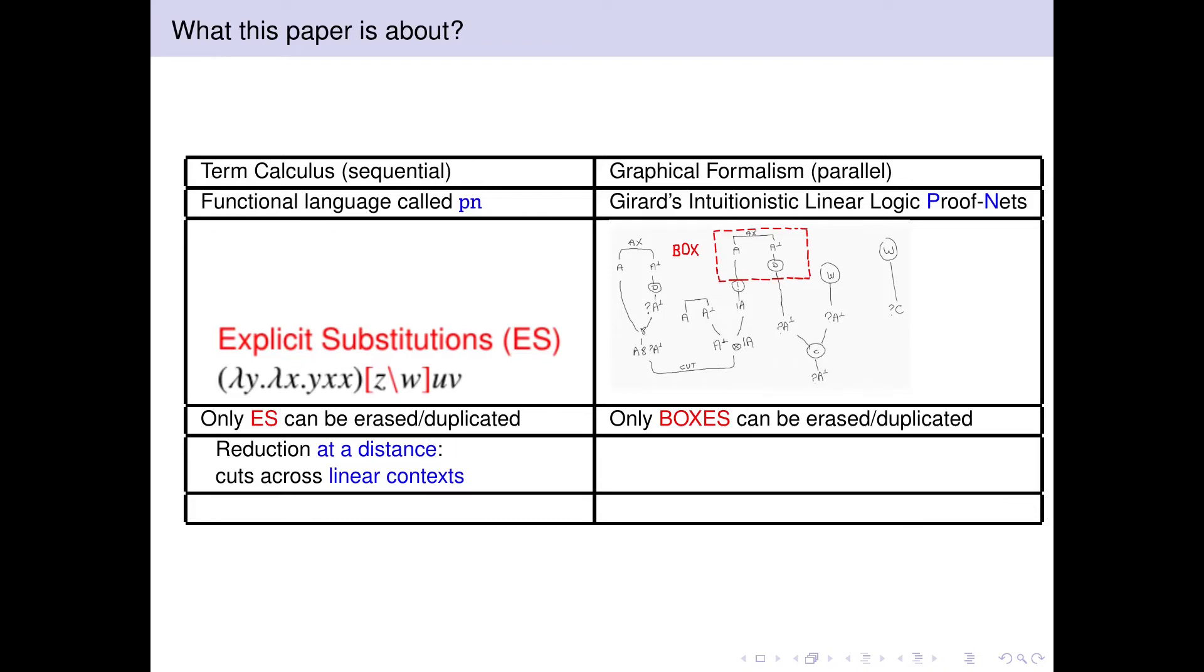This is precisely done to capture the evaluation mechanism in linear logic proof nets, which is given by a local notion of reduction manipulating the boxes.